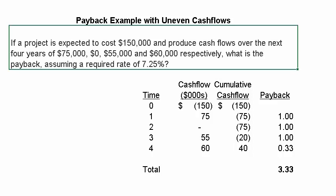If a project is expected to cost $150,000 and produce cash flows over the next four years of $75,000, $60,000, $55,000, and $60,000 respectively, what is the payback, assuming a required rate of return of 7.25%?